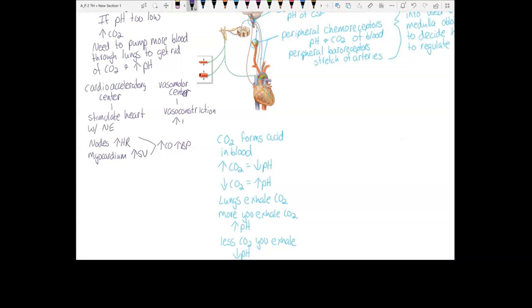This center will stimulate vasoconstriction. Vasoconstriction will increase resistance. And increasing resistance will increase blood pressure. So here you have three things that happen with sympathetic to increase blood pressure.